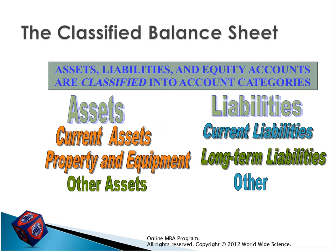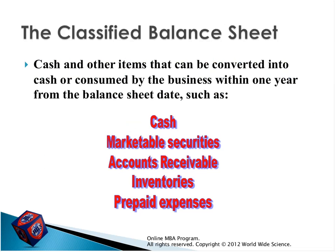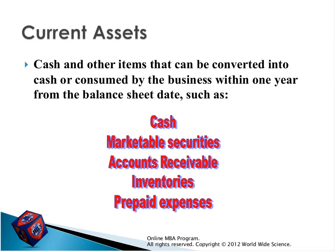Here is the classification of the balance sheet. The balance sheet includes assets, liabilities, and equities. Under assets come current assets, property and equipment — long-term assets — and other kinds of assets. Under liabilities we have current liabilities, long-term liabilities, and others. The current assets are cash and other items that can be converted into cash or consumed by the business within one year from the balance sheet date.